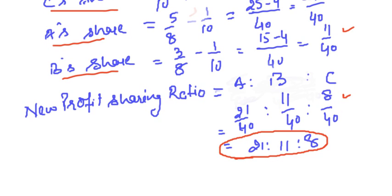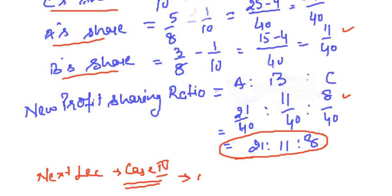He takes some part from one partner, some from the other partner, joins them, and that becomes the new partner's share. In the next lecture, we will discuss Case 4 of the new profit sharing ratio calculation. To recap: Case 1 was in lecture 52, Case 2 in lecture 53, and today we discussed Case 3. In the next lecture, we will cover Case 4, which is the first step of admission of a partner.